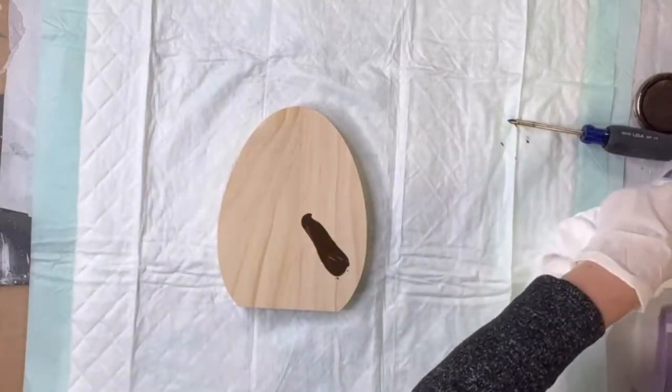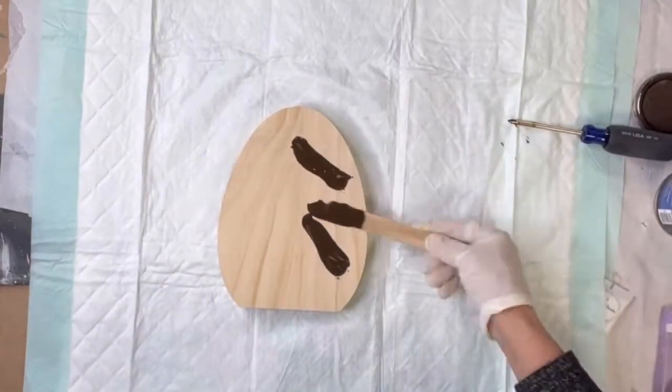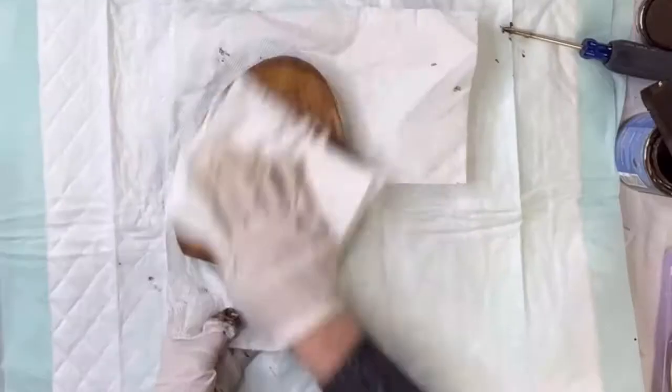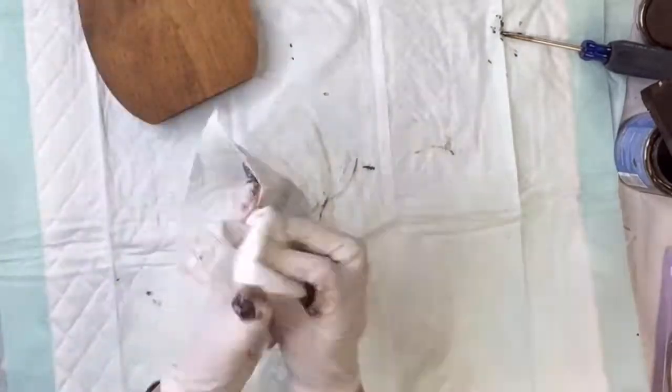I found this wooden egg at Target. I'm going to start by staining it in this nice warm brown tone. It's basically a wipe-on and wipe-off process.